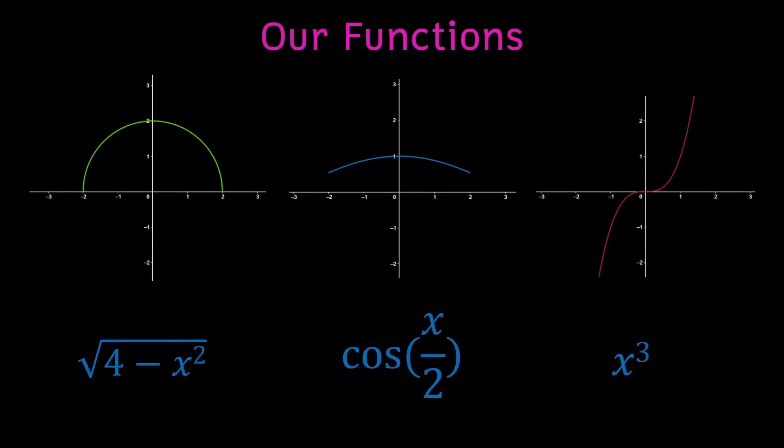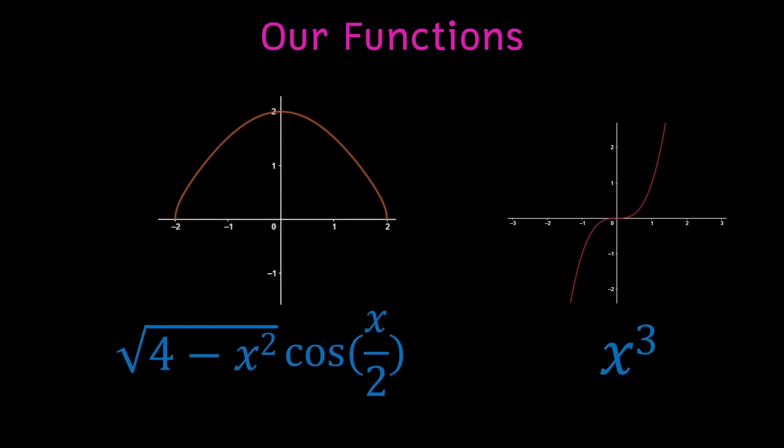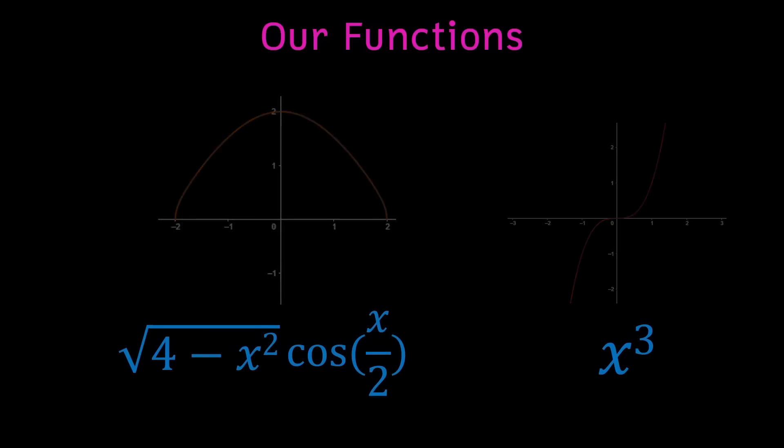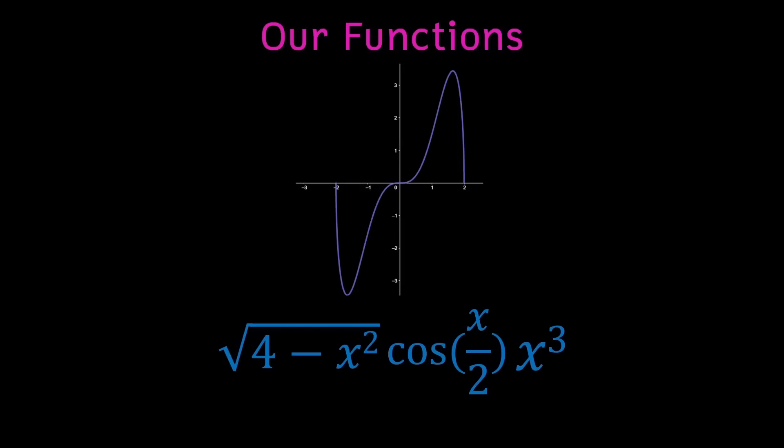If we graph the three main equations in this second integral over the interval negative 2 to 2, we see that the square root and cosine functions are even, and that the x cubed is odd. Multiplying two even functions results in an even function, and multiplying an even function by an odd function results in an odd function. So we can say that this whole expression is an odd function.